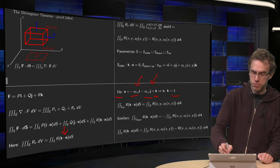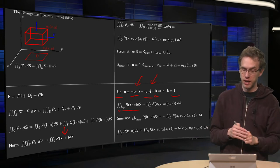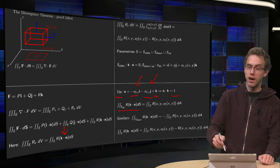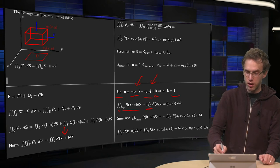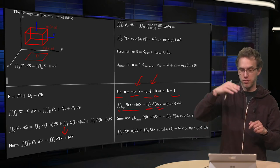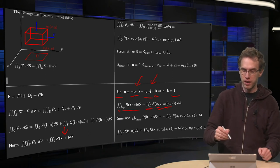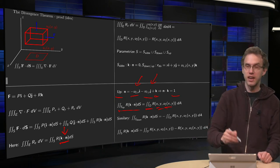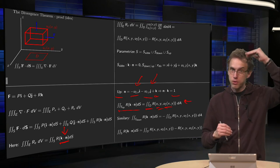So the integral along the upper part of r times k and n becomes, if we parameterize using x and y, integral along D, r of x and y. And for z we are on the upper surface for z, so we have u2 of x and y, and this factor k in n equals 1. So that's the flux integral along the upper surface.